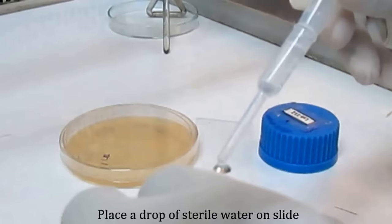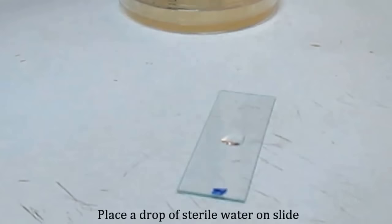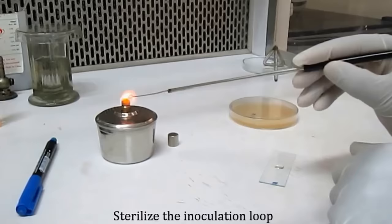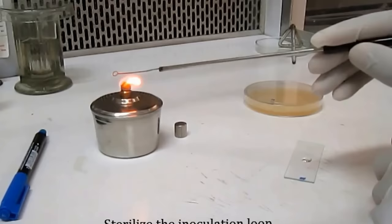Then place a drop of water on the slide. Sterilize the inoculating loop by passing it through the flame until it gets red hot. Take a drop of water on the slide.